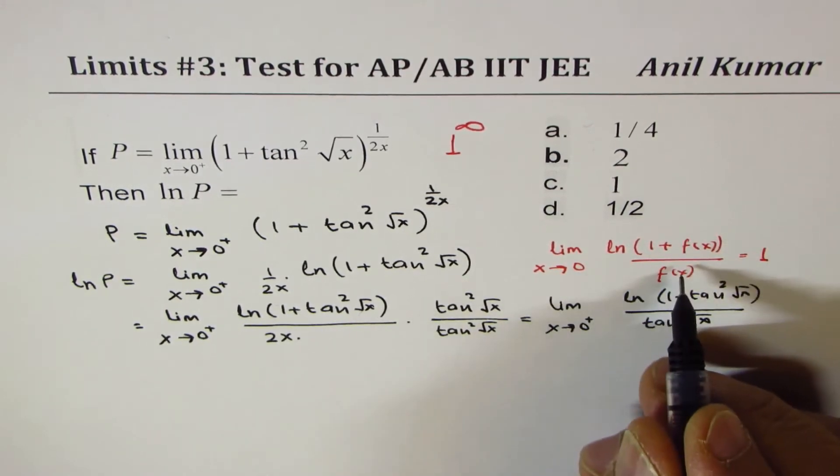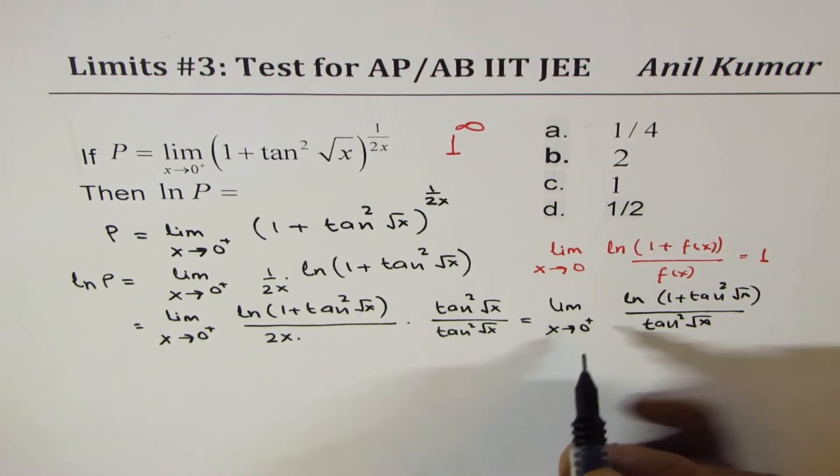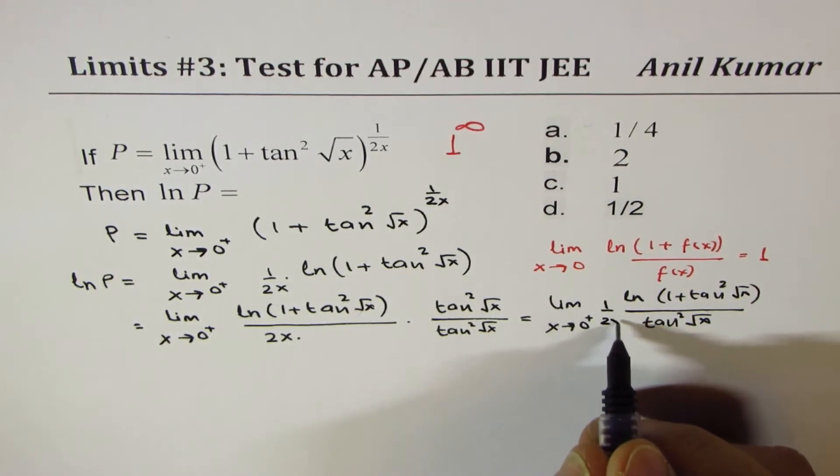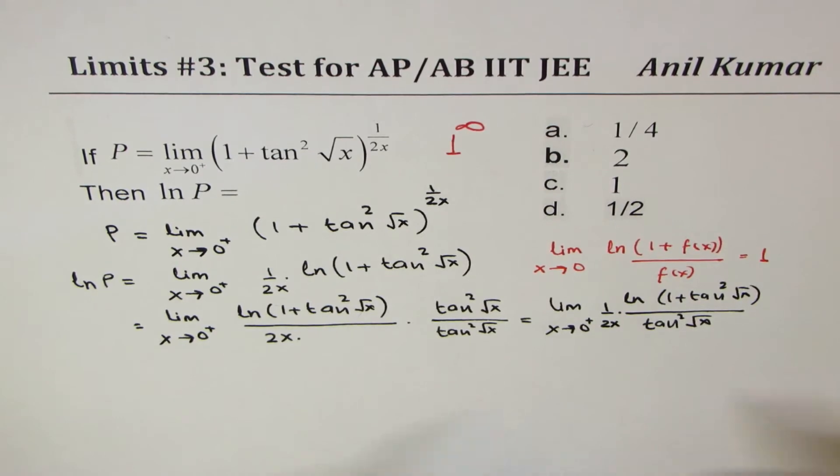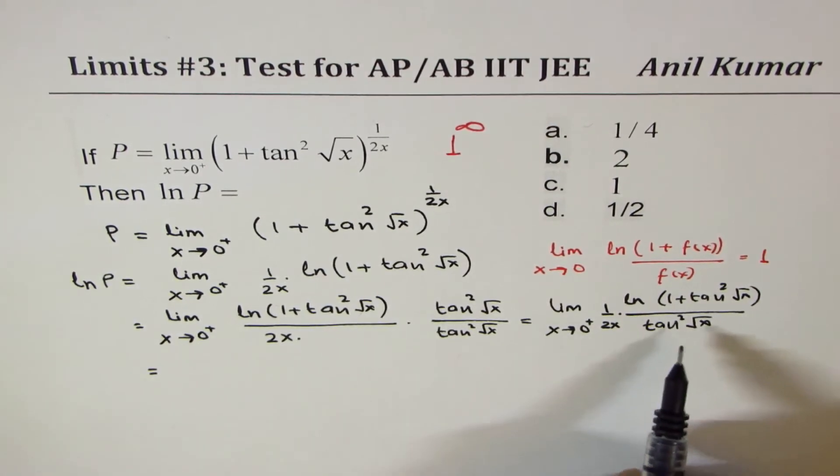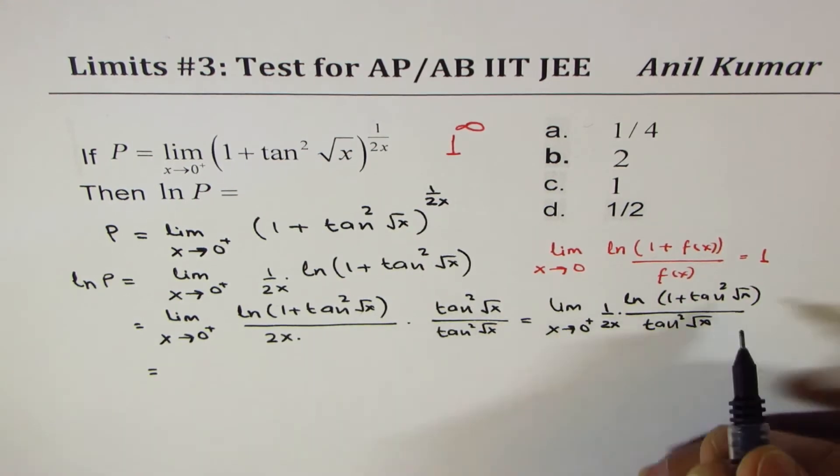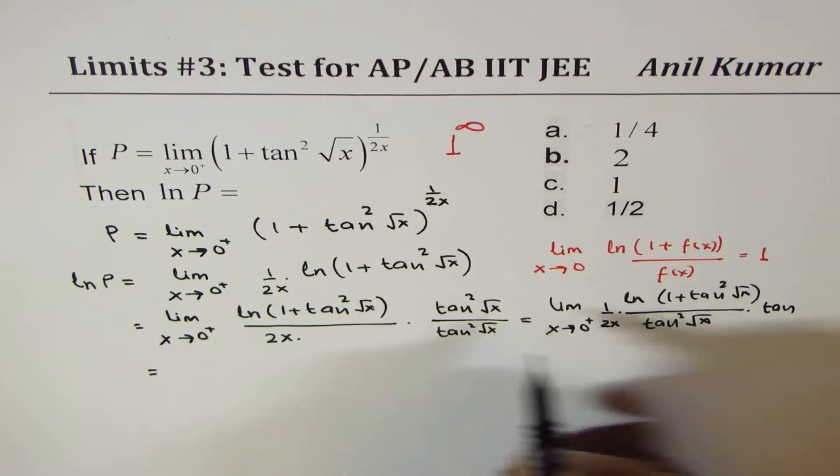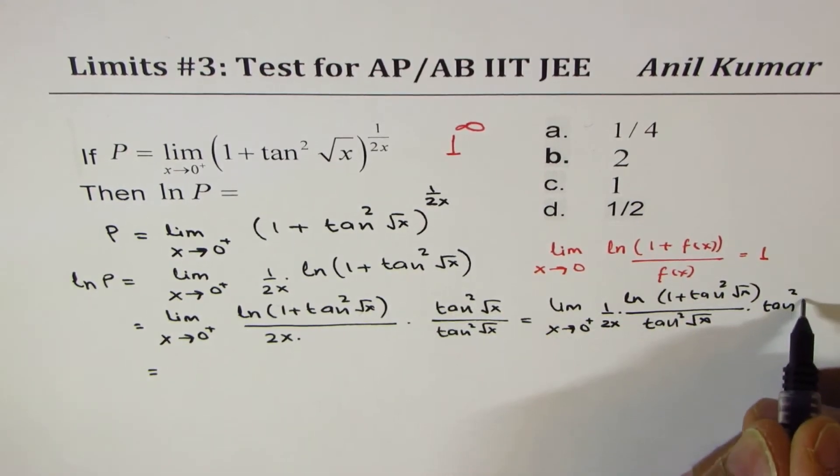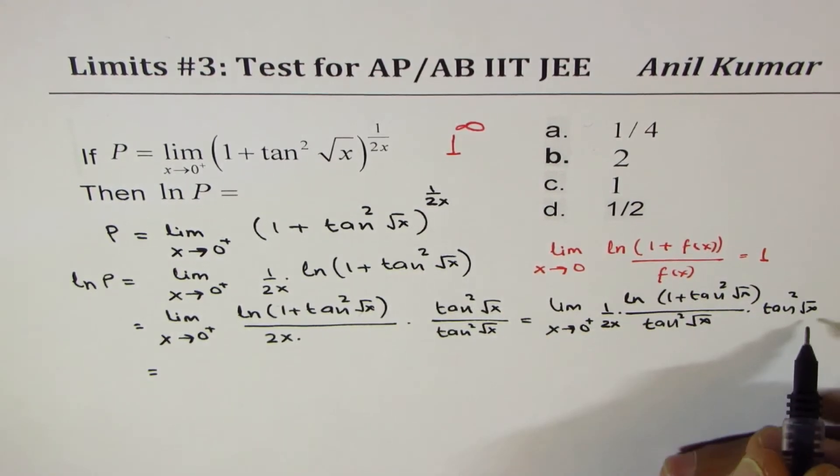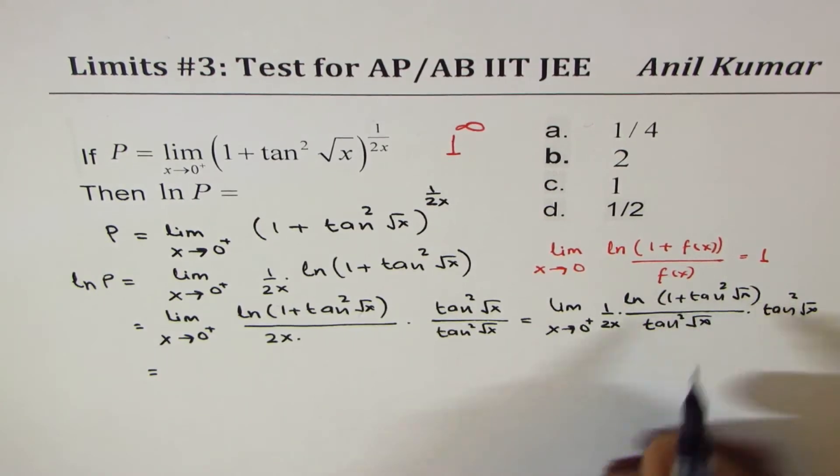Now that becomes 1 times 1/2x. Now that gives you, this part is 1 for us, and we have tan²√x on the right side.